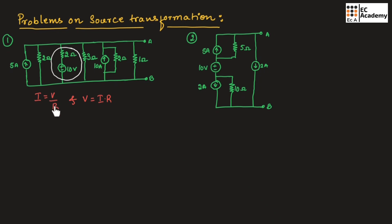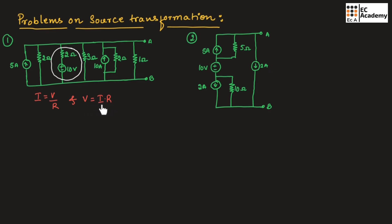you need to divide the voltage by the resistor, and the resistor should be connected in parallel with the current source. If you are converting a current source into a voltage source, you need to multiply the resistor with the current source, and the resistor should be connected in series with the voltage source.